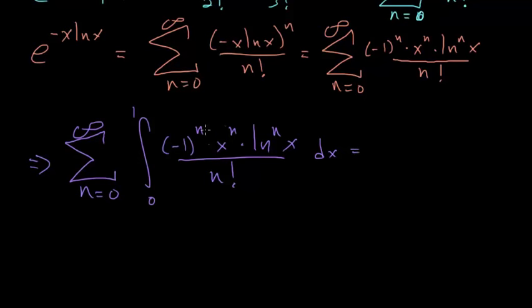And what we can do is pull out this minus 1 to the nth and n factorial since neither of these factors have an x in them. So this is equal to the sum of n is equal to 0 of minus 1 to the nth over n factorial